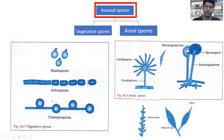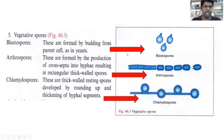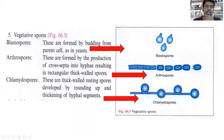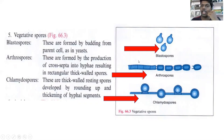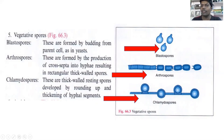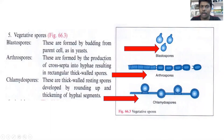Vegetative spores are below the medium. There are three types: blastospores, arthrospores, and chlamydospores. Blastospores are formed by budding — they are small, tough structures. Arthrospores have cross septa, and this cross septa degenerates to form small rectangular thick-walled structures. Arthrospores are formed by production of cross septae into hyphae, resulting in rectangular thick-walled spores.